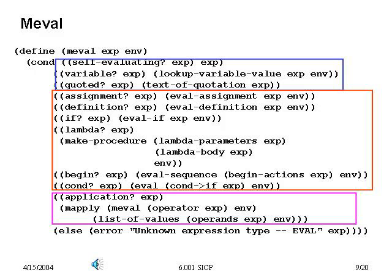Given an expression and environment, eval will check the type of expression using abstractions for seeing if it's a primitive, then a special form, then ultimately an application. In each case, it dispatches to a procedure to handle it. We know what variable should do — look up the value in the environment. Quoted should grab the quotation and return it. Definitions should create a binding for a name and value in the environment. If should change the order we evaluate expressions. The last thing we do is get to an application, evaluating the operator and getting values of all other sub-expressions as a list to apply that operator.